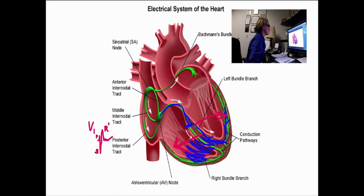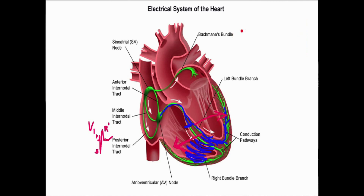This is a problem with left bundle branch block — we can't use that ECG to look for MI. But with right bundle branch block, that rule doesn't exist. To complete the picture, we'll look at V6. V6 and lead 1 are very similar — lead 1 is on the left arm and V6 is just below the left arm in the mid-axillary line, so they look alike and can be used interchangeably. In right bundle branch block, those two leads should look kind of opposite to what V1 shows.